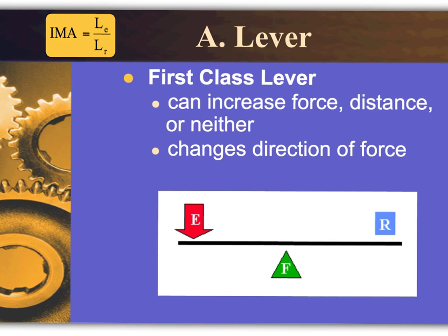A first class lever can increase the force, the distance, or neither — it can change the direction of the force. When we look at a lever, we consider the effort arm, the resistant arm, and the fulcrum. The fixed point is the fulcrum, here is the effort or applied area, and here is the resistant area.